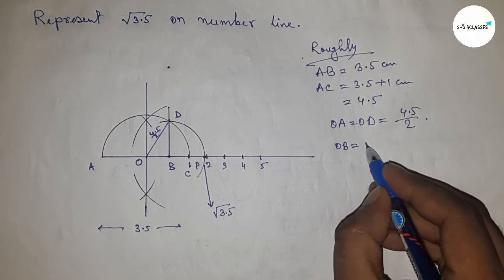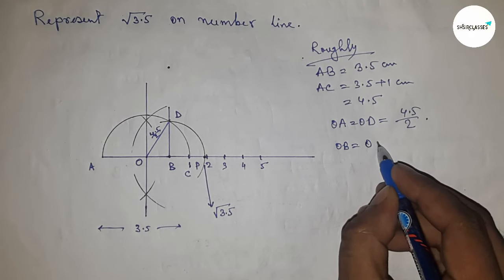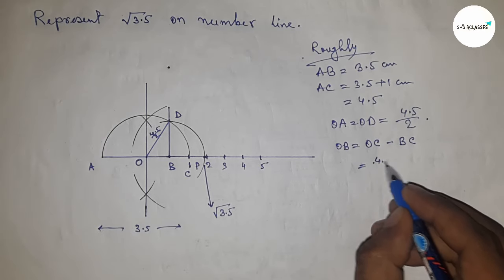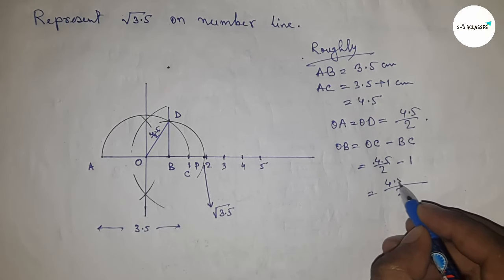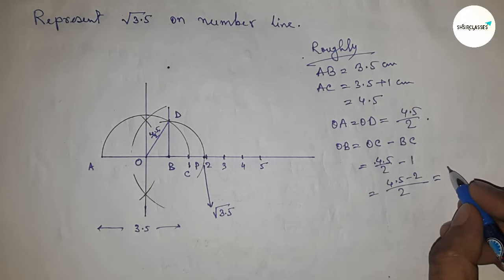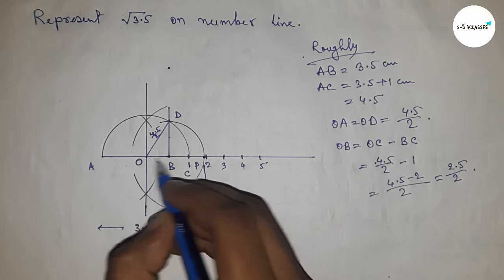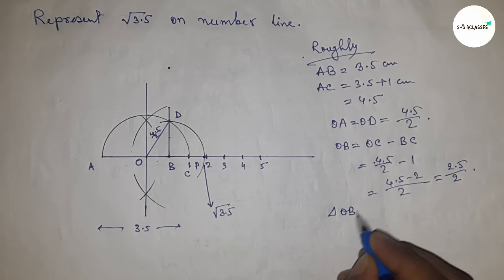So the radius OA equals OD equals 4.5 by 2 cm. Next, finding the length OB by subtracting OC from BC. OC equals 4.5 by 2 minus 1, so calculating this we get 2.5 by 2 cm, which is 2.5 cm.